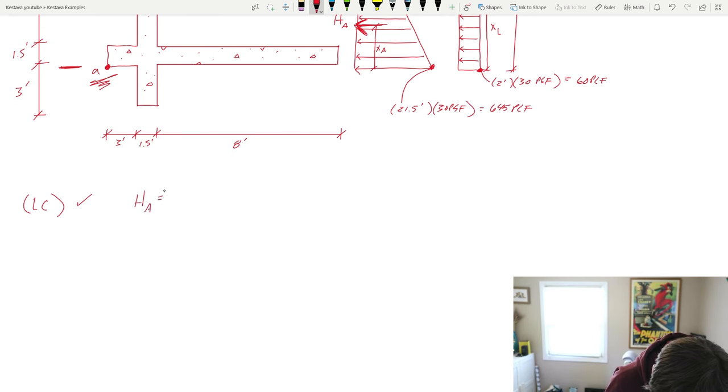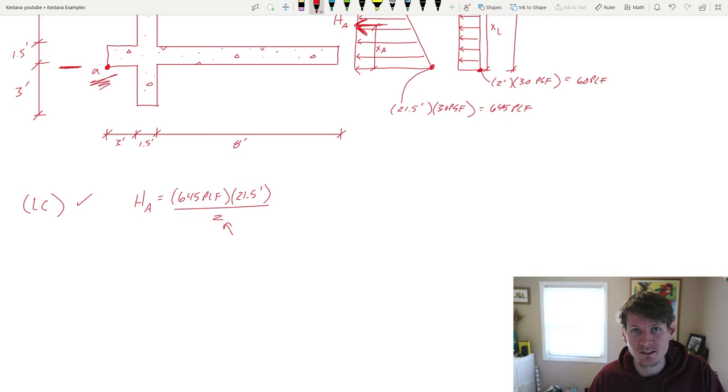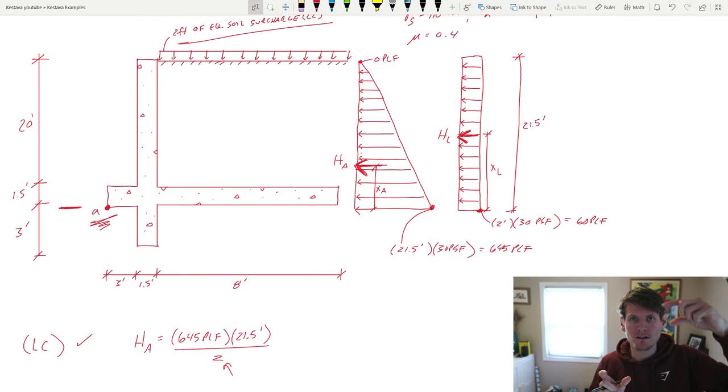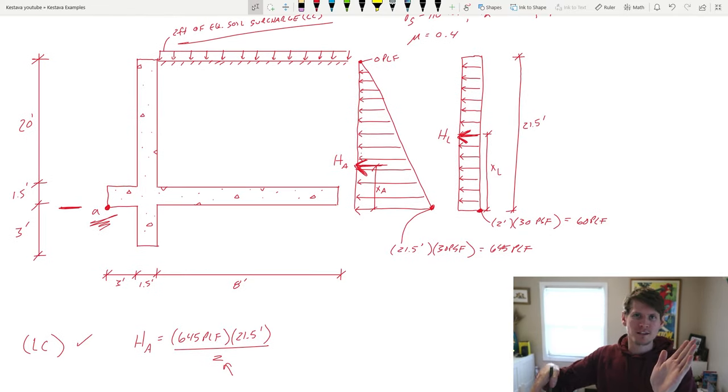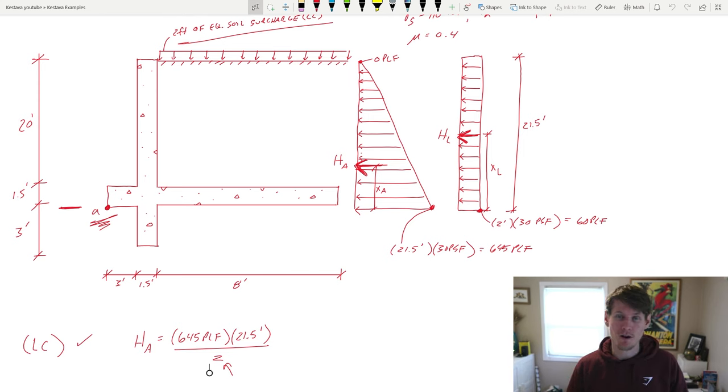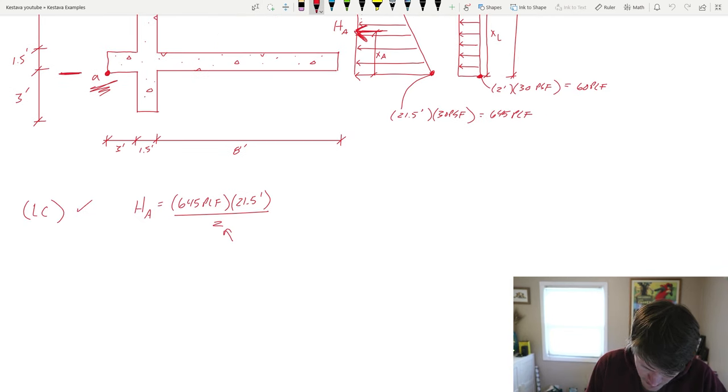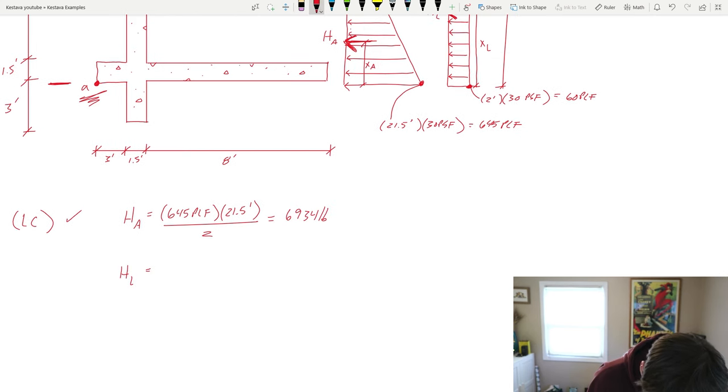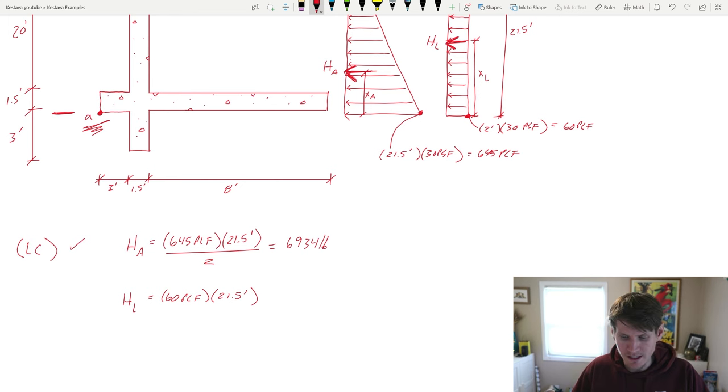Now H sub A is equal to the following. This divide by two is because it's a triangular distribution. So in reality even though I drew it kind of a skinnier triangle, it's always a perfect one half of an equally sided square. So the loading height is equivalent to the loading depth for your triangle. So that divide by two just gets our triangle in case anyone was wondering there. That spits out the following. H sub L is equal to the following. Notice no divide by two here because it is a rectangular distribution. So it's just the full height times the demand and that gets us.